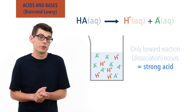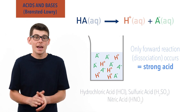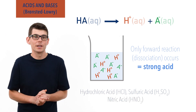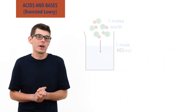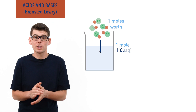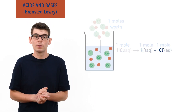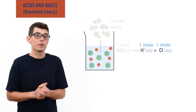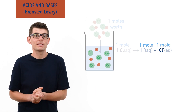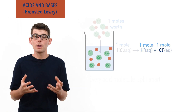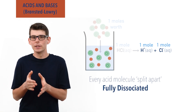Common examples of strong acids include hydrochloric acid, sulfuric acid, and nitric acid, and they completely dissociate when added to water. If, for example, you add one mole's worth of hydrochloric acid molecules to water, they will pretty much all split apart, and you will end up with one mole's worth of H+ ions and one mole's worth of chloride ions in the solution. As every molecule of acid can be considered to have split apart, we say the acid has fully dissociated and is fully ionized.